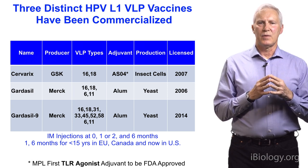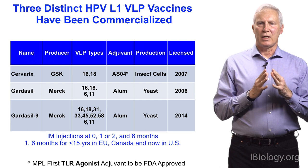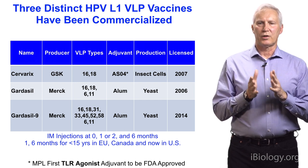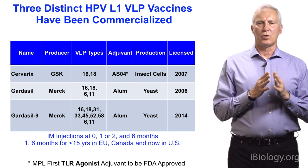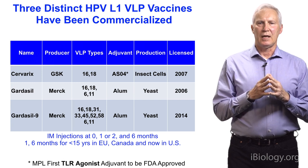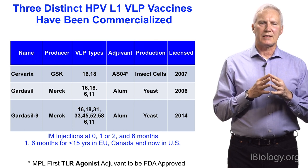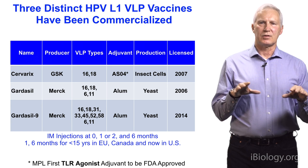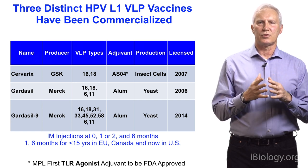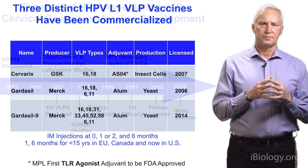The vaccines are administered by intramuscular injection, generally at zero, one or two months, and then six months. More recently, an abbreviated schedule of one and six months has been adopted in the EU, Canada, and the United States for individuals less than 15 years old, based on the finding that two doses in younger age groups produce antibody responses equivalent to three doses in young adults in whom efficacy was demonstrated in clinical trials.